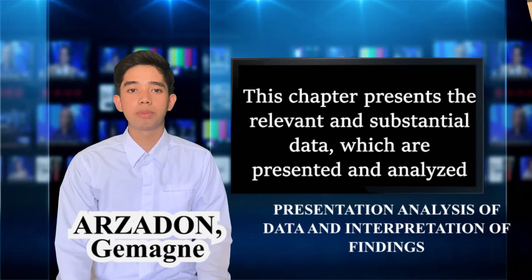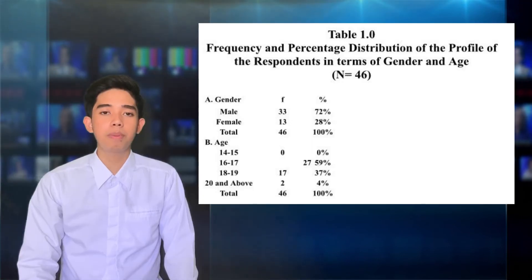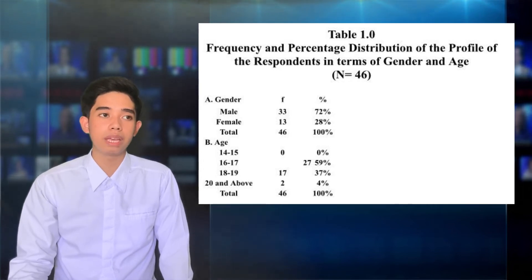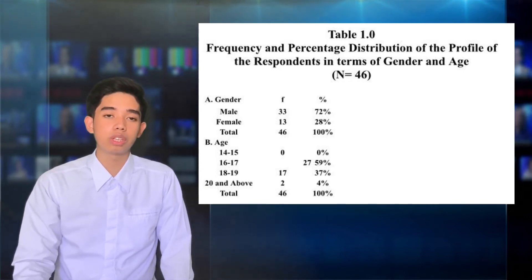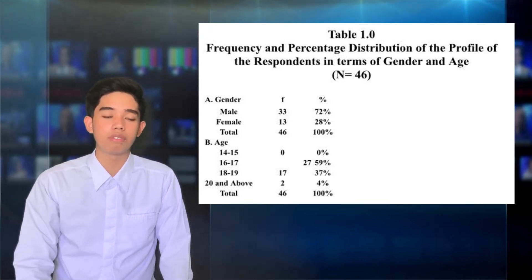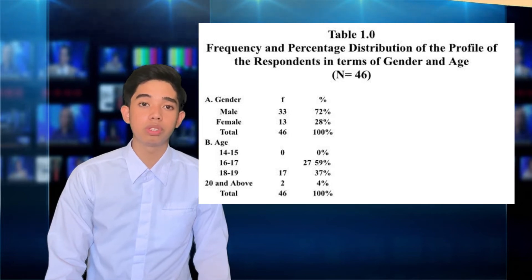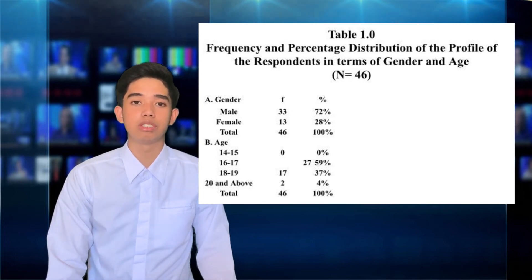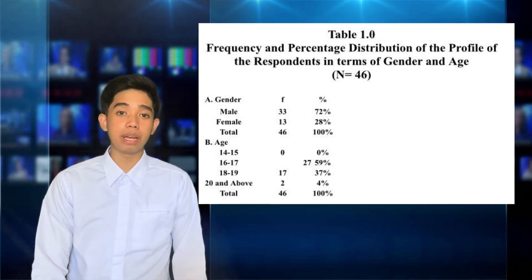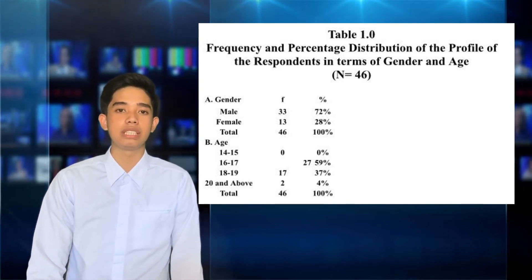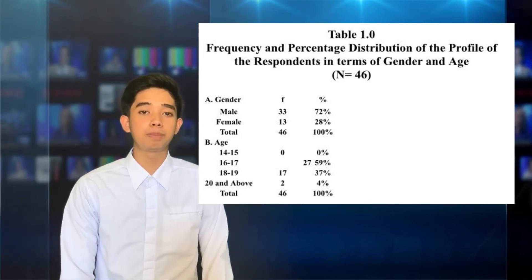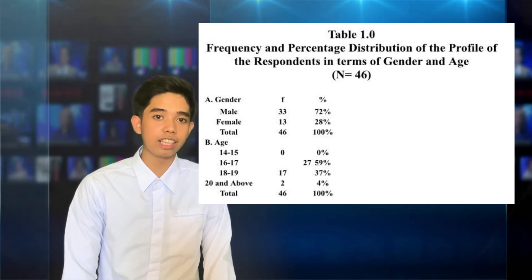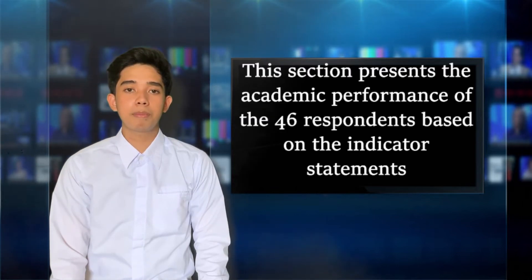This chapter presents the relevant data which are analyzed and interpreted in the context of the research problems. The frequency distribution shows 28% female and 72% male respondents. In terms of age distribution, 41.3% male and 17.4% female respondents are aged 16 to 17; 42.43% male and 6.52% female respondents are aged 18 to 19; and 0% male and 4.35% female respondents are aged 20 and above.